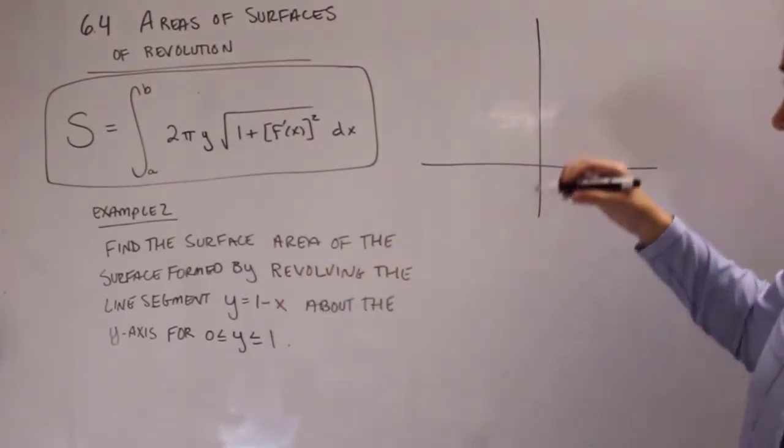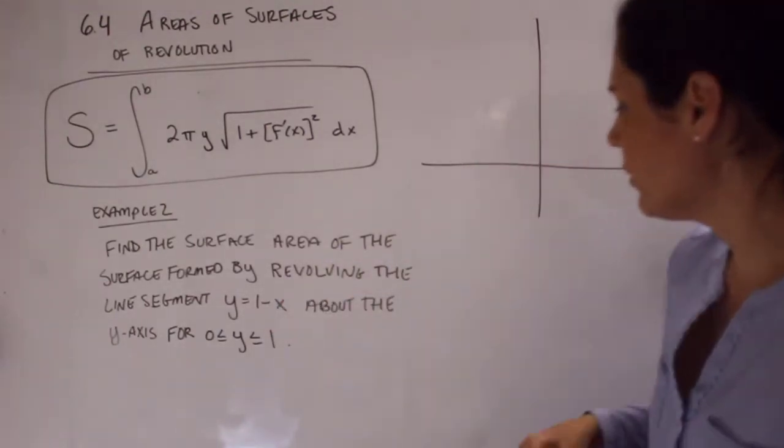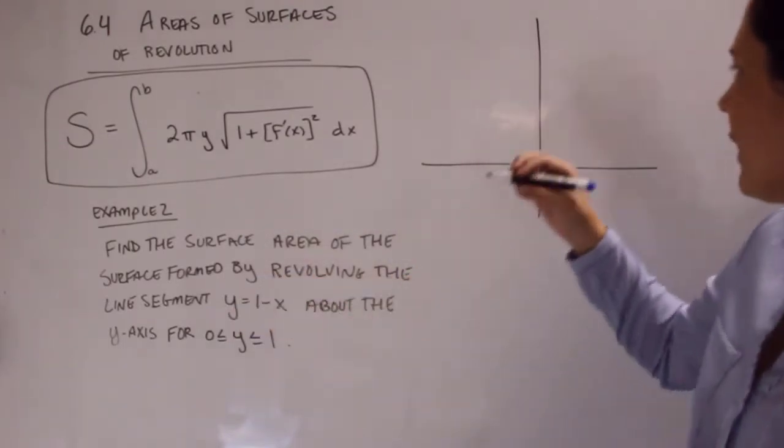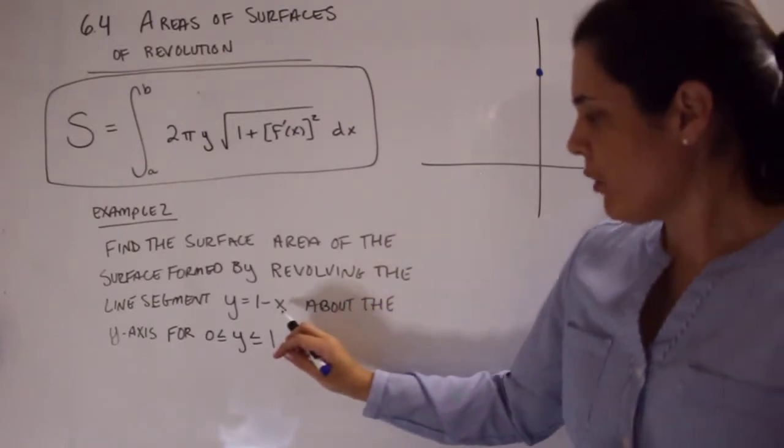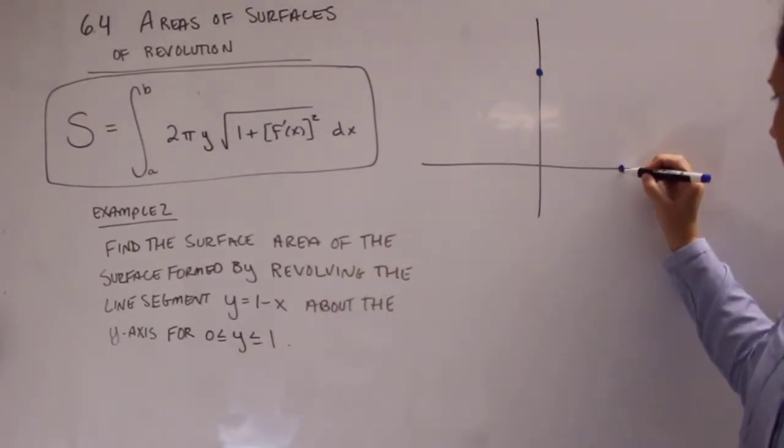it's the line y equals 1 minus x. So if I plug in 0, x is 1. Sorry. If I plug in 0 for x, y is 1. So right over here. If I plug in 1 for x, y is 0. So I'll say it's about right there.